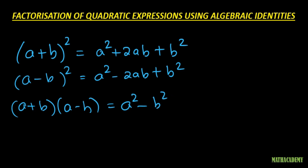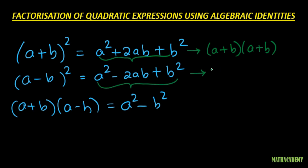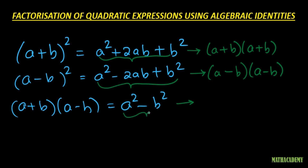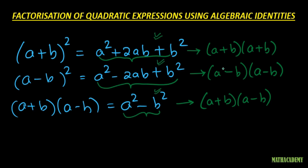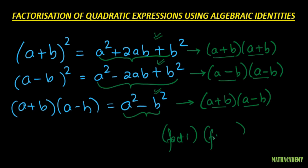What we see in all these three identities is that if we have an expression of the form a² + 2ab + b², we can write it as (a + b)(a + b), which is (a + b)². If an expression is of the form a² - 2ab + b², it can be written as (a - b)(a - b). And if an expression is of the form a² - b², we can write it as the product of (a + b)(a - b). In all these cases, writing an expression as the product of factors is called factorization.